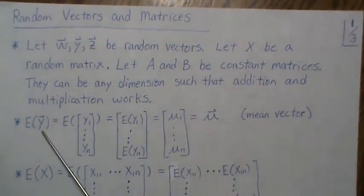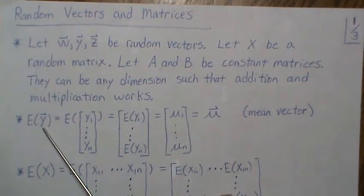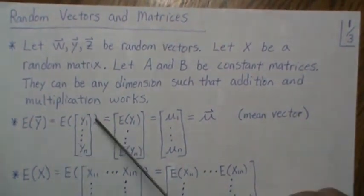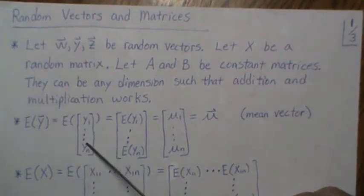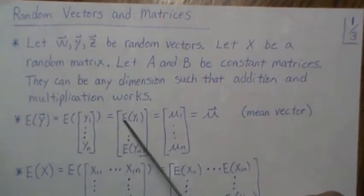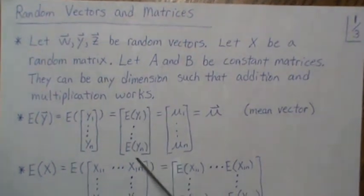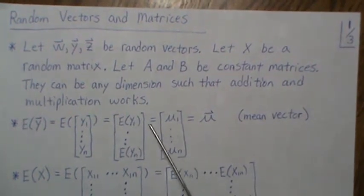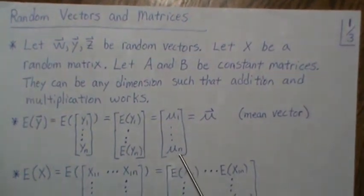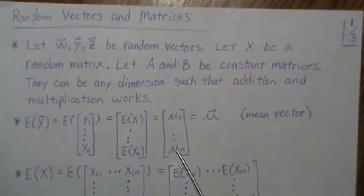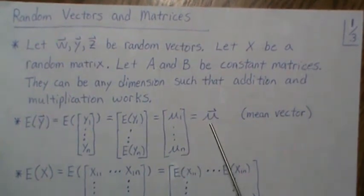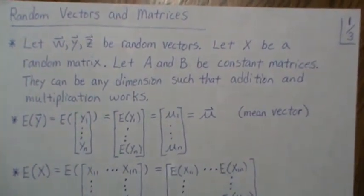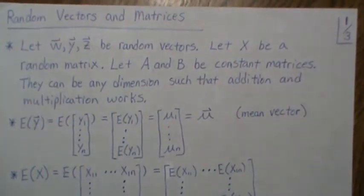The expected value of a random vector y — where the vector is [y1, y2, ..., yn] — is really the expected value of each component. So the expected value of y1 is mu1, all the way to mu_n, giving us a vector of constants. We call this mu, the mean vector. That's how you take the expected value of a random vector.